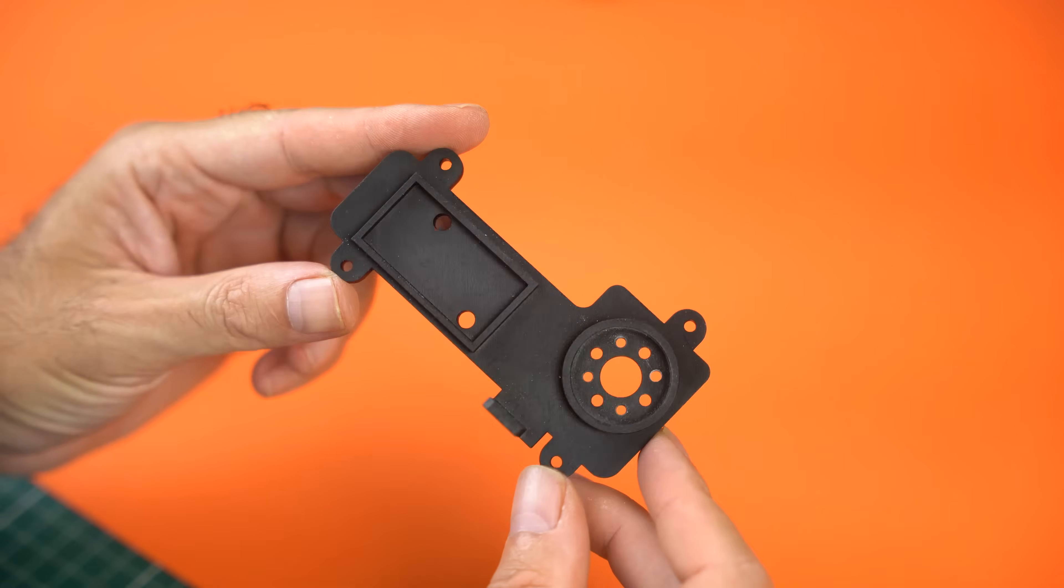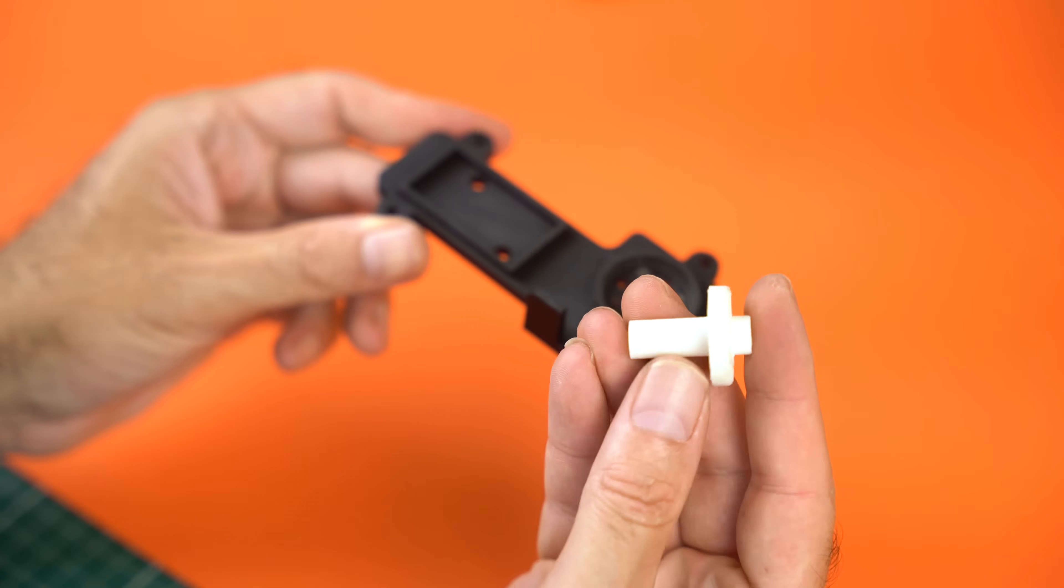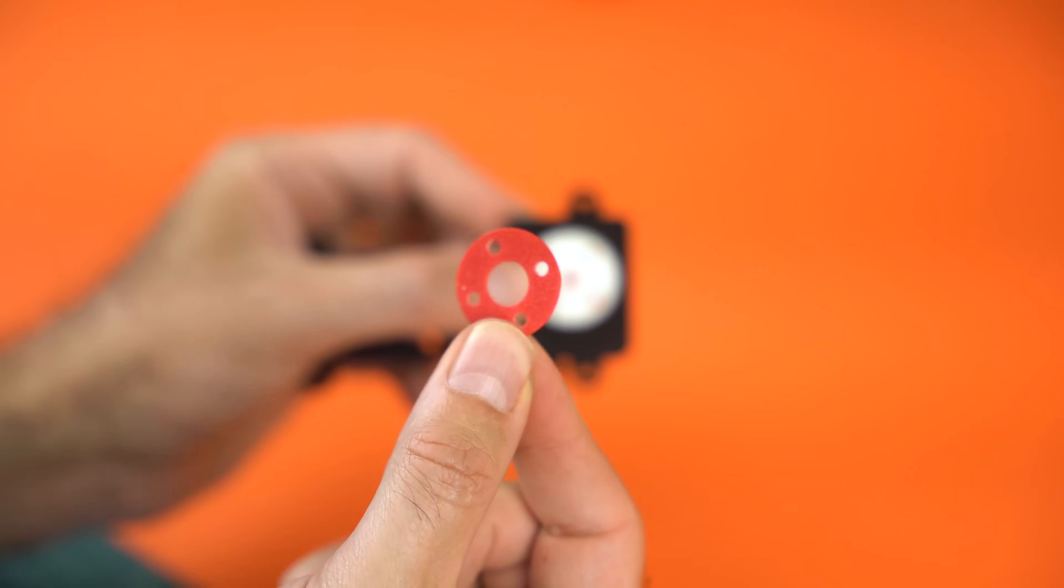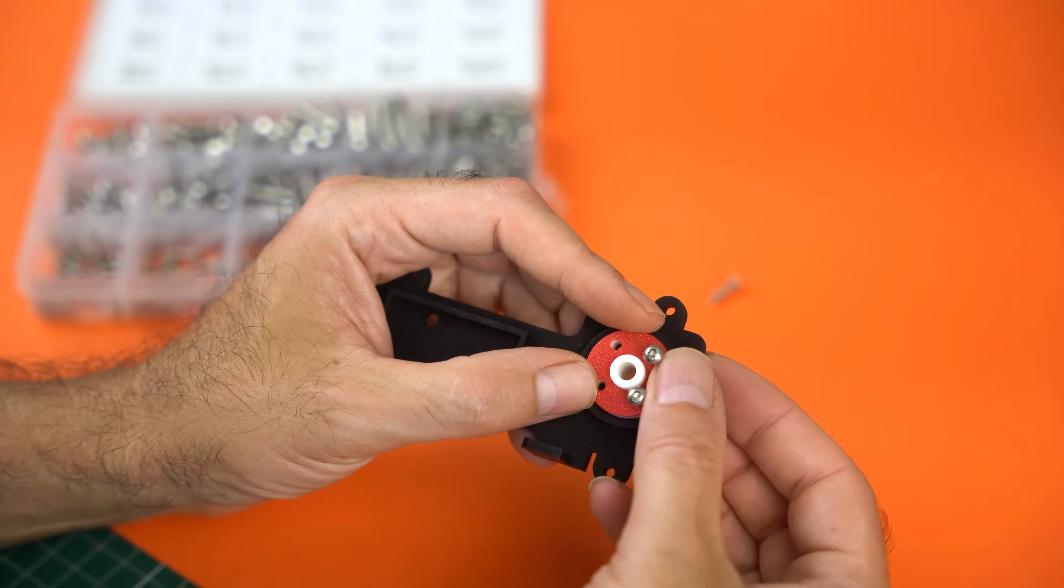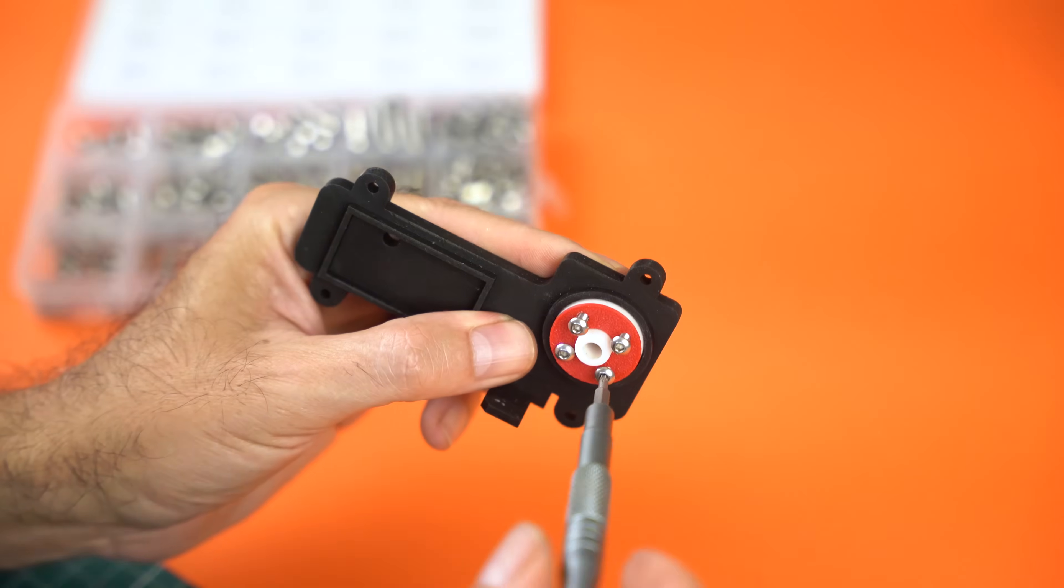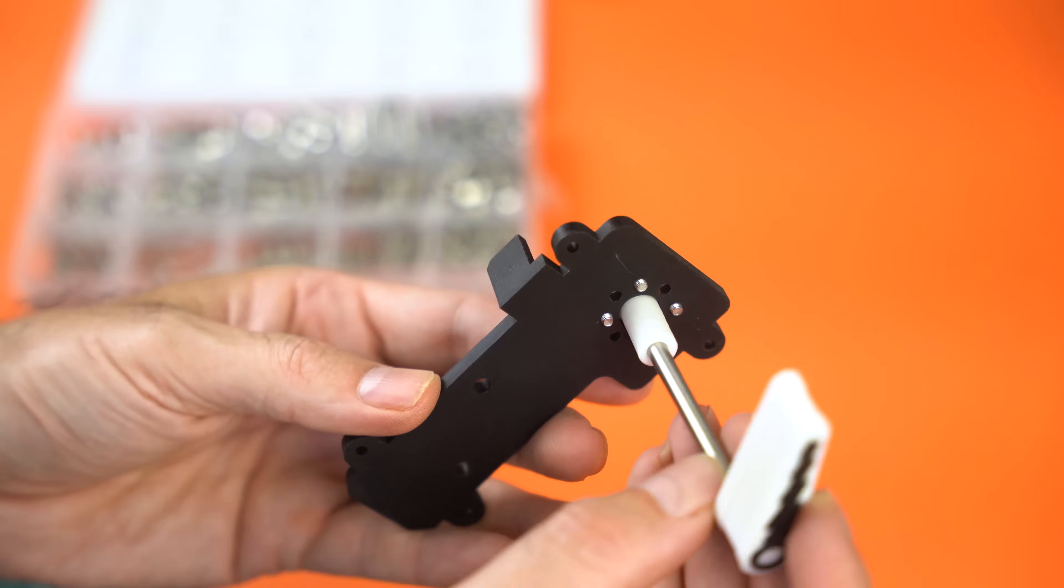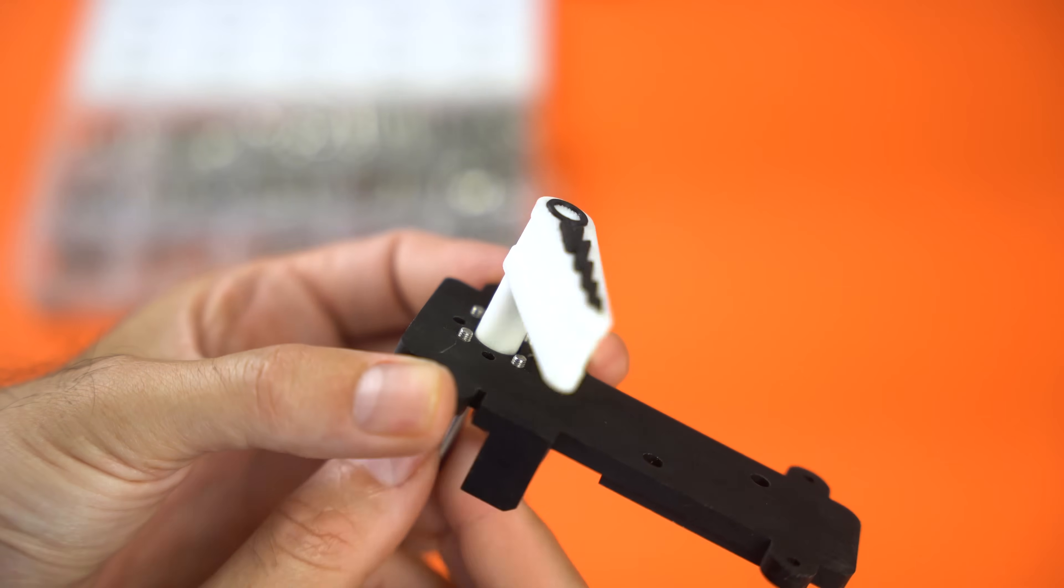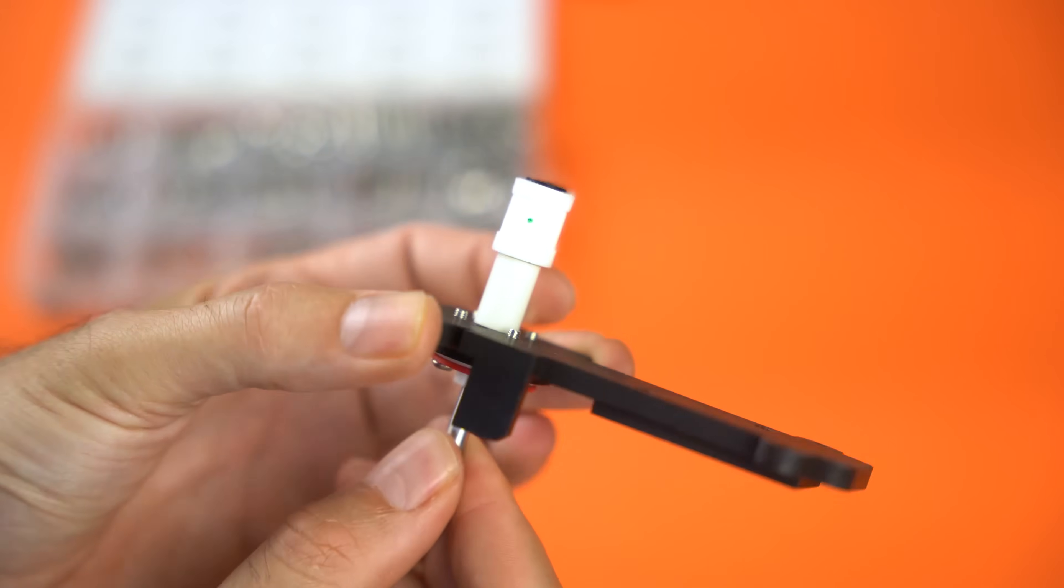Then I cut it to length and finish the bottom using a drill driver as a makeshift lathe. My drill lathe. Now it fits perfectly. If you don't have a heavy-duty vice like mine, you can force it in with a hammer. But with a proper vice, it's much easier. Check that the rod is perfectly square. Perfect.